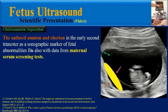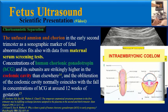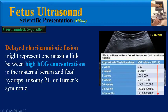The unfused amnion and chorion in the early second trimester is a sonographic marker of fetal abnormalities. Data from maternal serum screening shows that concentrations of human chorionic gonadotropin and its subunits are strictly higher in the coelomic cavity. Delayed chorioamniotic fusion might represent a missing link between high HCG concentrations in maternal serum and fetal hydrops, trisomy 21, or Turner's syndrome.